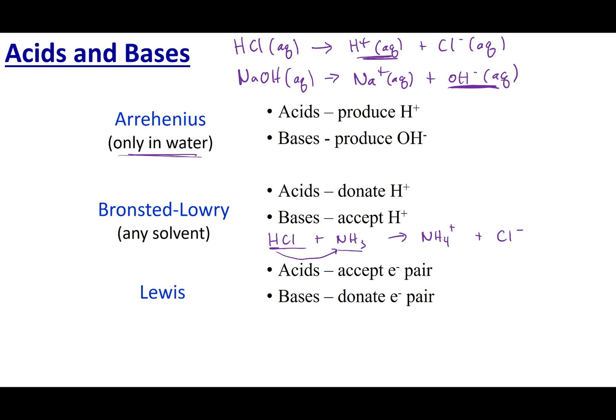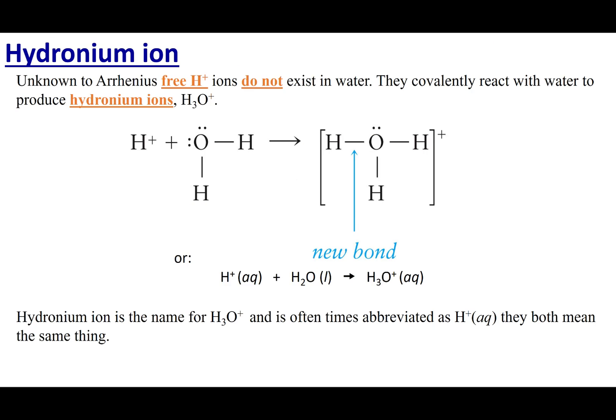Now, the Lewis definition is acids are electron pair acceptors, bases are electron pair donators. Don't worry about the Lewis definition right now. It will be something that we'll discuss in Chem 1C. So what I want you guys to worry about is the Arrhenius definition and the Bronsted-Lowry definition. So let's talk about H+ ions in solution.